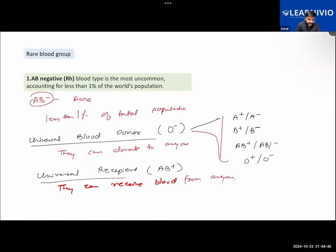Some blood groups are special - some are universal. If someone has an O negative blood group, they can donate to anyone. They are said to be a universal blood donor. And a person with AB positive blood group can receive blood from any group - they are the universal recipient. The AB negative blood group is very rare, with less than 1% of the total world population having it.